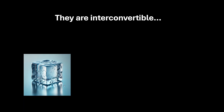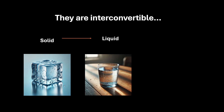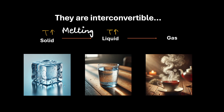Most solids can be converted to liquids on heating. So if we take this cube of ice and increase the temperature, we will get liquid water, and this process is called melting. Now, if we take liquid water and increase the temperature further, it will be converted to steam, and this process is called vaporization.